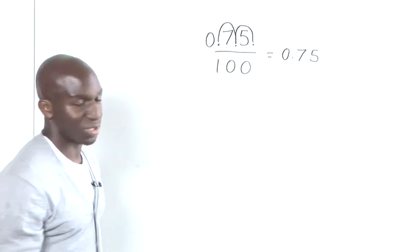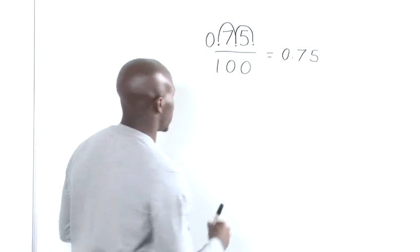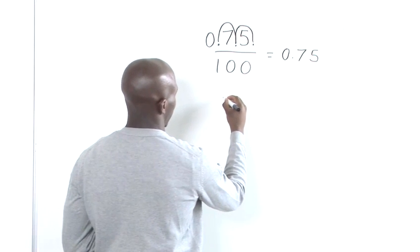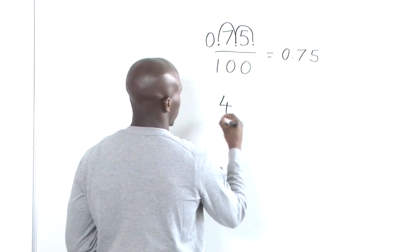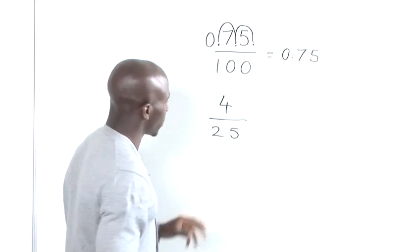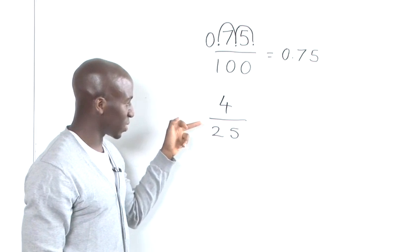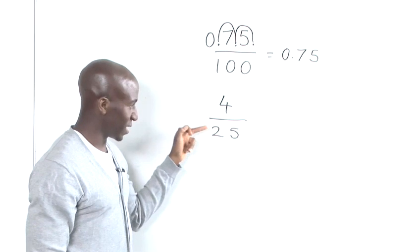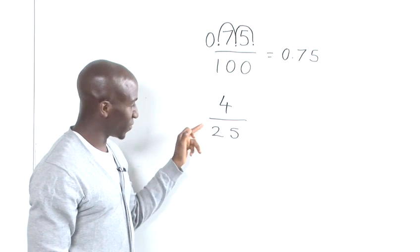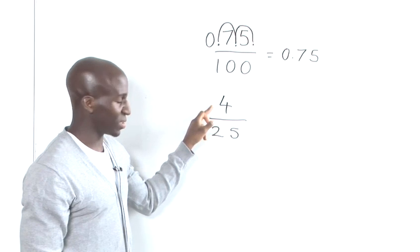Now, just imagine if you have another fraction, which may be, say, 4 divided by 25. The first thing, again, would be to actually see how many times you can multiply this to get to 100. And whatever you've done to this denominator, you have to do to the numerator.